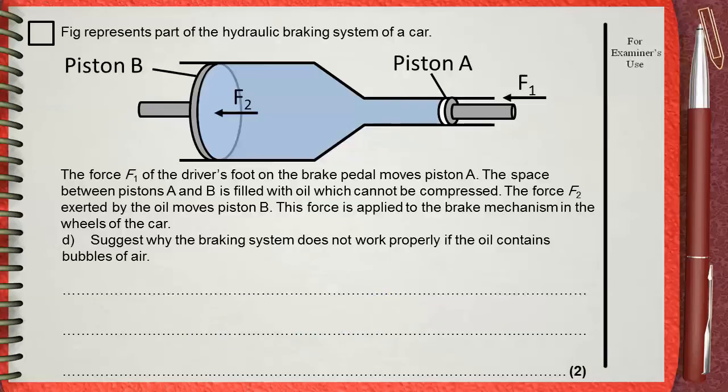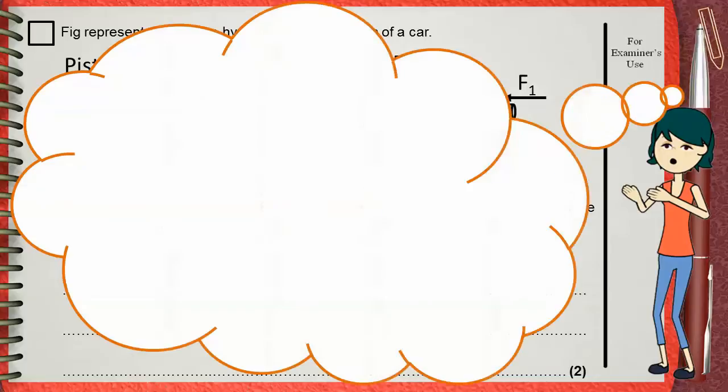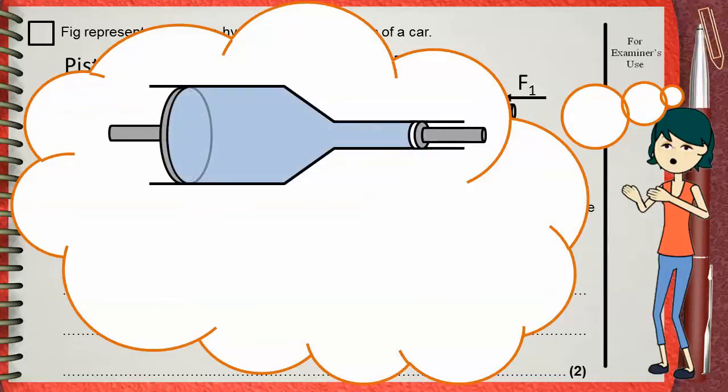Now, imagine again, this is our braking system with incompressible oil. But what if there is an air bubble inside the oil? The air bubble is gas. Gases are compressible, unlike liquids.